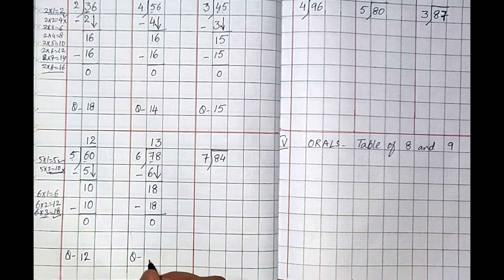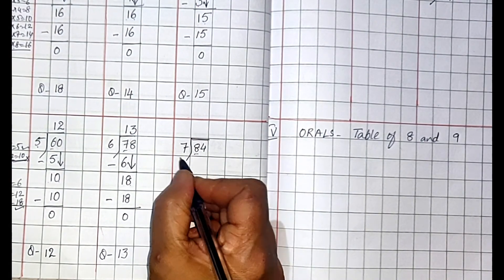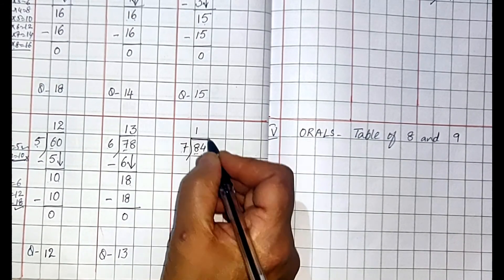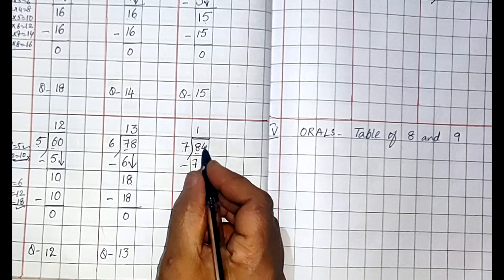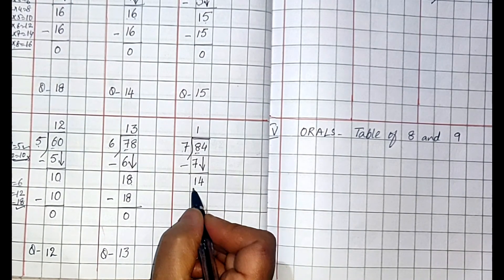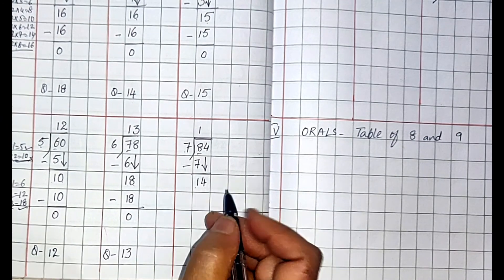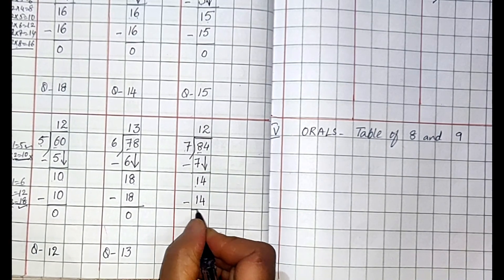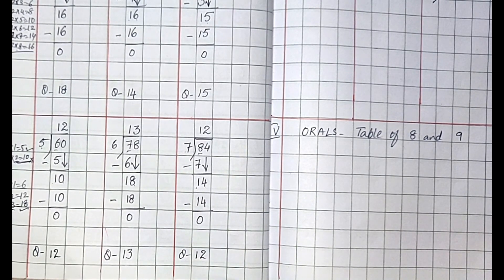Now eighty-four divided by seven. Check the first number — eight is greater than seven. Seven ones are seven. Eight minus seven is one. Your next number is four, so write four here next to the remainder. Your number is fourteen. Seven ones are seven, seven twos are fourteen — it goes two times. Seven twos are fourteen. Minus sign — fourteen minus fourteen is zero. Your quotient is twelve. Understood, children?